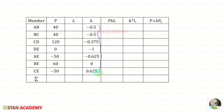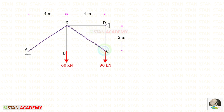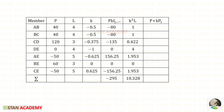Let us enter all K values. Now we find the lengths: AB, BC, and ED = 4 m; BE and DC = 3 m. For the inclined members AE and CE, using Pythagoras: √(3² + 4²) = 5 m. With all lengths entered, we compute P·K·L and K²·L for each member, then sum them to get the totals needed.